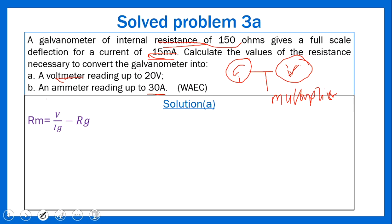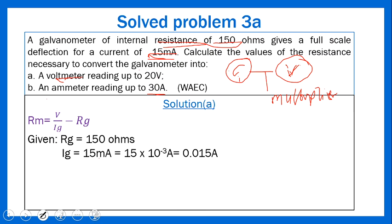Identifying parameters for part (a): RG = 150 ohms. IG = 15 milliampere; converting: 15 × 10⁻³ = 0.015 ampere. V = 20 volts. Substituting into the multiplier formula: RM = 20 / 0.015 − 150.